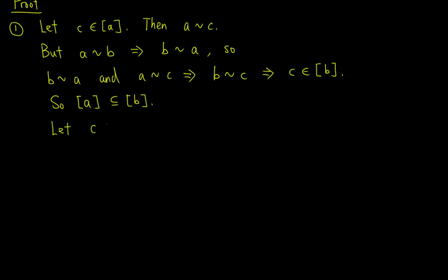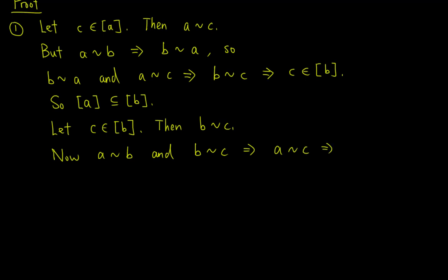Conversely, let C be an element of the equivalence class of B; then B is related to C. Now A is related to B and B is related to C, so A is related to C since R is transitive. This implies C is an element of the equivalence class of A. So the equivalence class of B is contained in the equivalence class of A, and hence they must be equal.